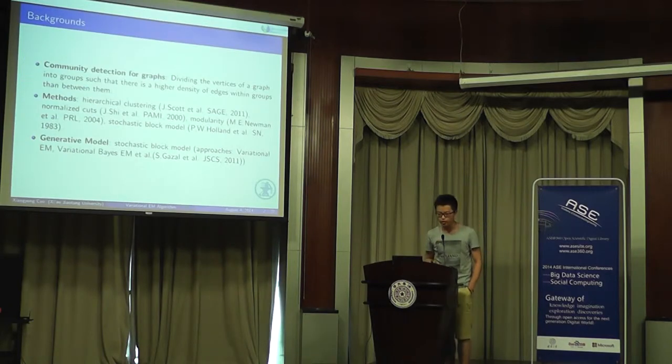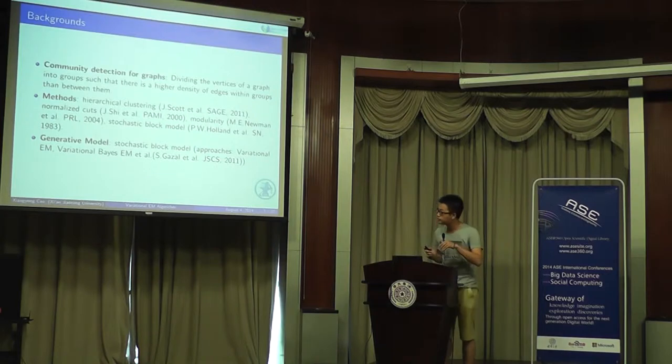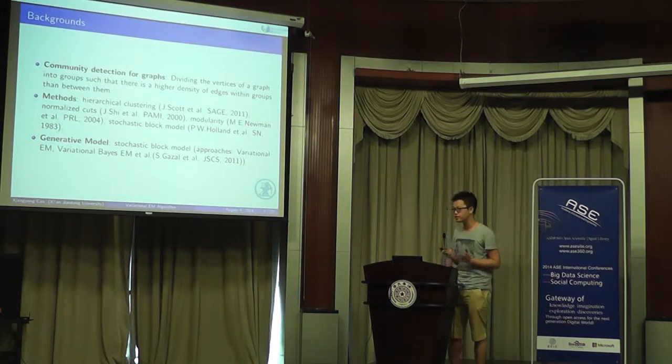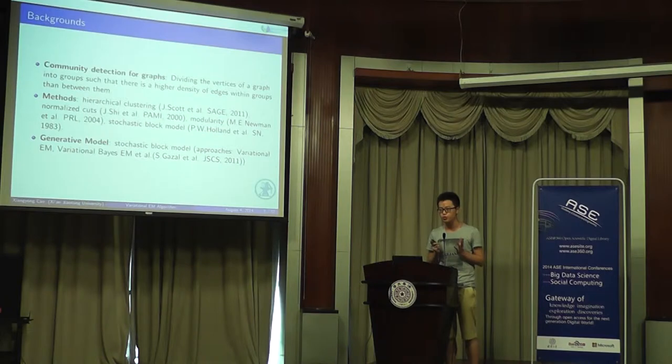First I'll introduce the backgrounds. What is Community Detection for Graphs? Community Detection for Graphs is to divide the vertices of a graph into groups, so that there is a higher density of edges within groups than between them.